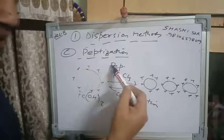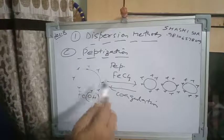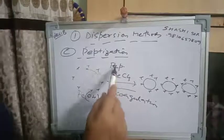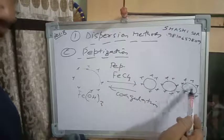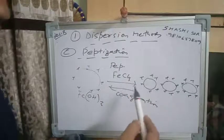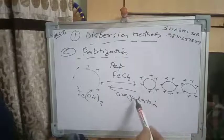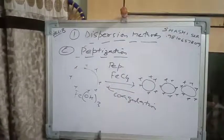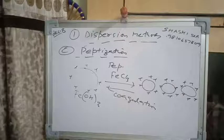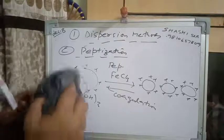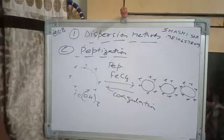Peptization and coagulation are reverse processes. Adding electrolyte to a precipitate causes peptization — converting it to colloidal particles. Adding excess electrolyte to colloidal particles causes coagulation — converting them back to a precipitate. This relationship is important to remember. The Fe(OH)₃ colloidal particles are reddish-brown in color and are stabilized in solution. These are the dispersion methods.